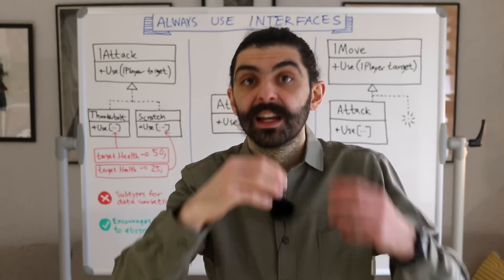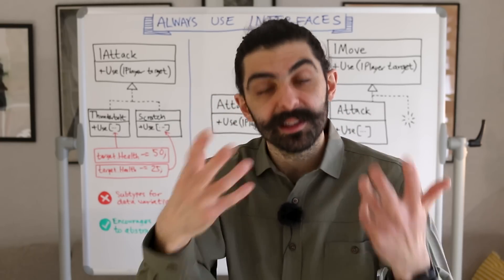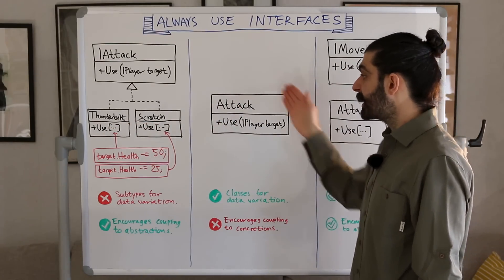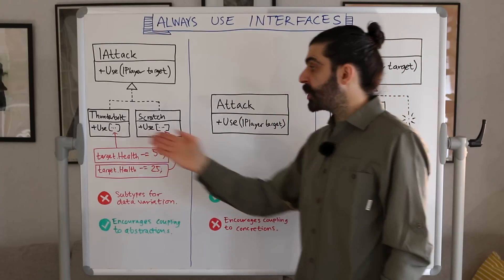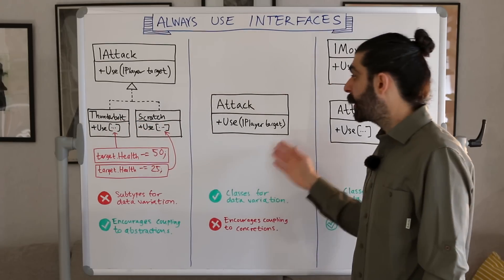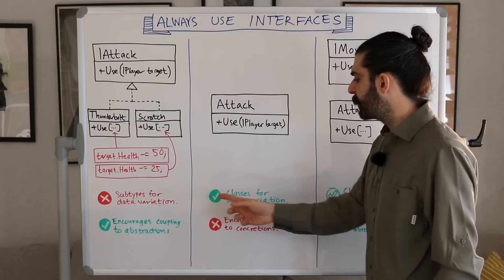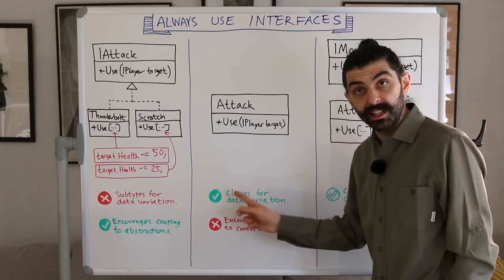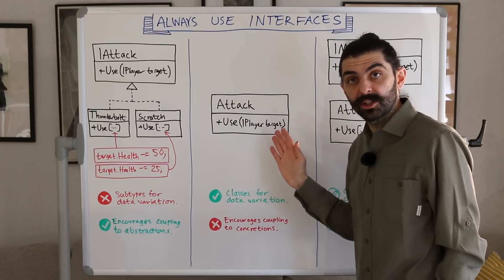The difference should be captured as objects instantiated with different parameters instead of subtypes with different implementations. So instead of two subtypes, we end up with a single class called Attack. Depending on how you construct objects of this type, you get an object corresponding to what was previously Thunderbolt or Scratch — but now these are objects of type Attack. By doing this, we solve the problem of using subtypes for data variation, because we use classes for data variation instead.